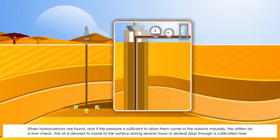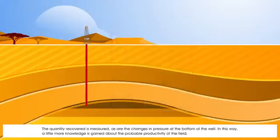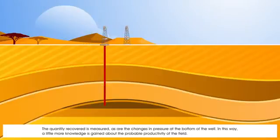When hydrocarbons are found, and if the pressure is sufficient to allow them to come to the surface naturally, the drillers do a flow check. The oil is allowed to come to the surface during several hours or several days through a calibrated hole. The quantity recovered is measured, as are the changes in pressure at the bottom of the well. In this way, a little more knowledge is gained about the probable productivity of the field.